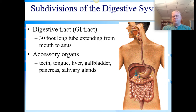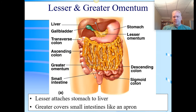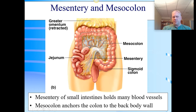Our digestive tract, or GI tract — gastrointestinal tract — is about 30 feet long, going from the mouth to the anus. We also have things that affect the system that aren't part of this tube — what we call accessory organs: your teeth, tongue, liver, gallbladder, pancreas, and salivary glands. All of those things are part of the digestive system but aren't part of the tube. The colon is digestive in nature but that's going to be for water absorption.